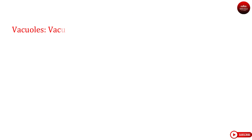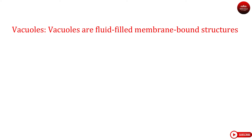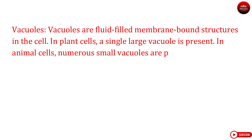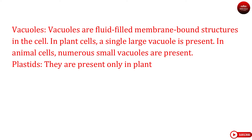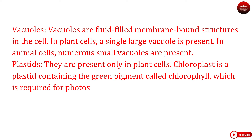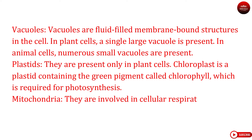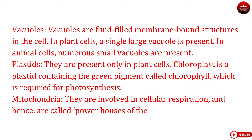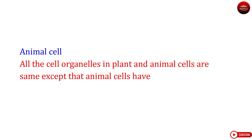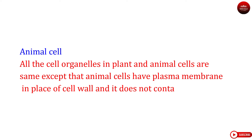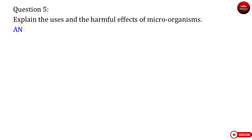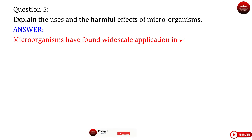The entire living substance in a cell is known as protoplast. Vacuoles are fluid-filled membrane-bound structures in the cell. In plant cells, a single large vacuole is present; in animal cells, numerous small vacuoles are present. Plastids are present only in plant cells. Chloroplast is a plastid containing the green pigment called chlorophyll, which is required for photosynthesis. Mitochondria are involved in cellular respiration and hence are called powerhouses of the cell. Animal cell: all the cell organelles in plant and animal cells are the same, except that animal cells have a plasma membrane in place of a cell wall and do not contain chloroplasts.